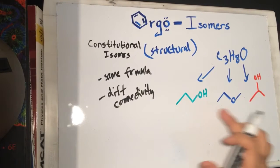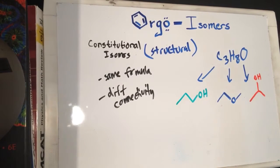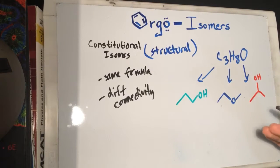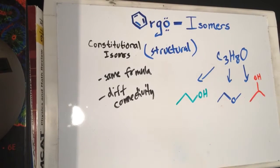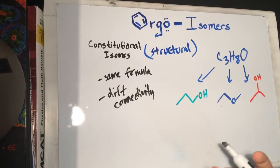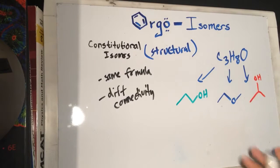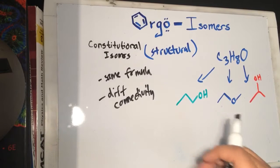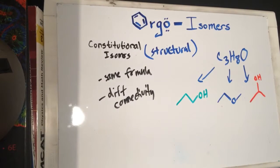Because all these molecules have completely different connectivity, that tells you that these are different molecules. Therefore they all have different chemical and physical properties — boiling point, melting point, all that stuff. So structural isomers: same amount of atoms, same carbons, hydrogens, oxygens, but completely different connectivity, therefore different chemical and physical properties. These are all different compounds — that's the simplest one to think about.